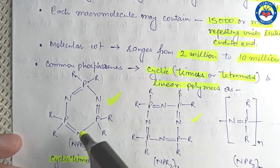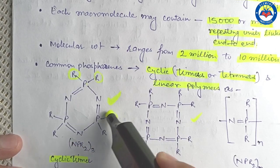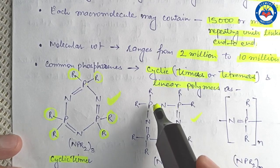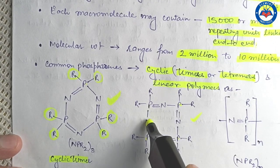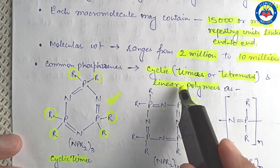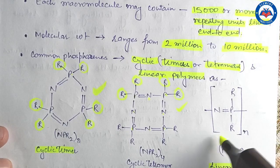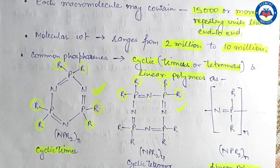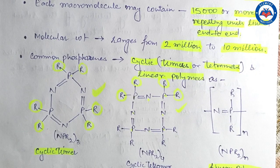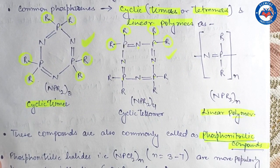The structure of the cyclic trimer has three phosphorus and three nitrogen atoms attached alternately with double-single-double-single bonds, and two R groups attached to each phosphorus atom. The tetramer similarly has four phosphorus and four nitrogen atoms alternately bonded, with two R groups on each phosphorus. There is also a structure for the linear polymers.